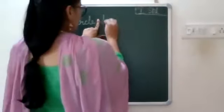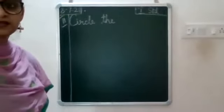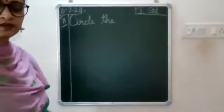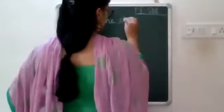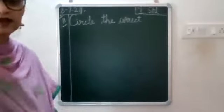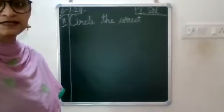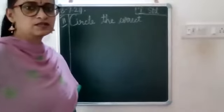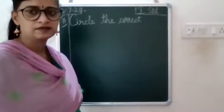Write T-H-E, circle. Leave a finger space, write C-O-R-R-E-C-T, correct. Leave a finger space.